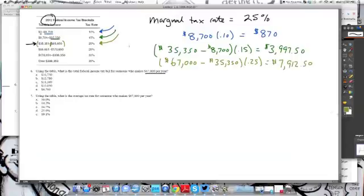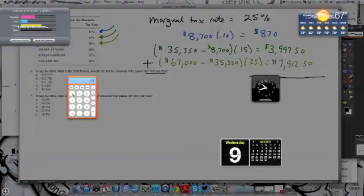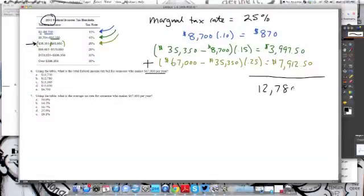So now we know for each tax bracket, the 10%, the 15%, and the 25%, how much this individual owes. So the total tax, we're simply just going to sum the three of them up. We've got $870, plus we've got $3,997.50, plus we've got $7,912.50, and we get $12,780. And if we look over here, that's one of the answers that we're given, so the answer is going to be B.